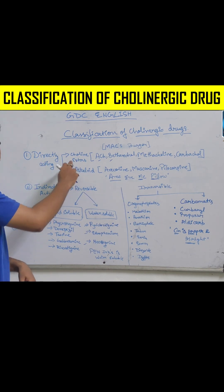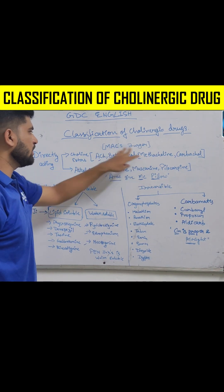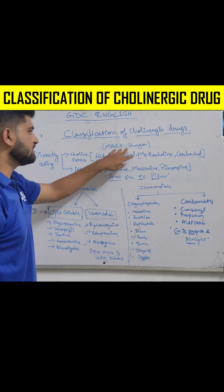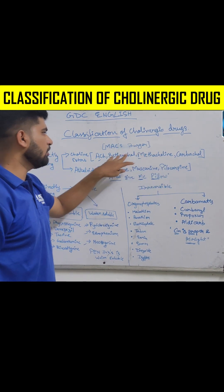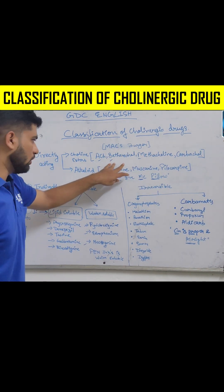Cholinesters can be learned through the mnemonic 'MAC B': M for Metapoline, A for Acetylcholine, C for Carpocole, and B for Belfinicol.